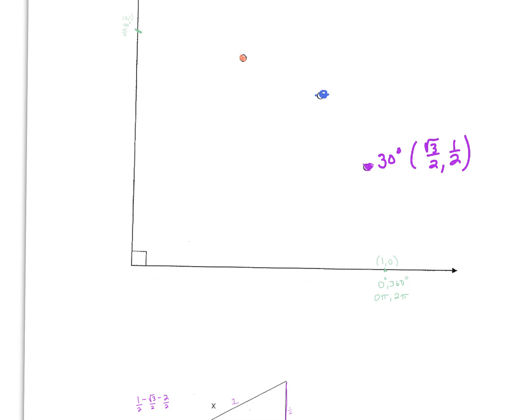Now let's think about the radian measure. Pi is equivalent to 180 degrees. 180 divided by 6 equals 30, so that tells us that 30 degrees is equivalent to pi over 6 — that's the radian measure.